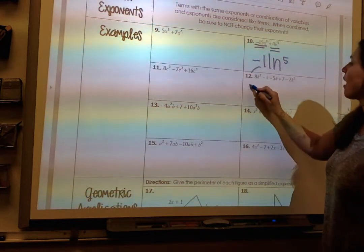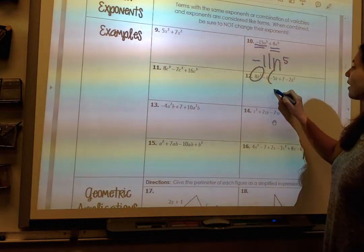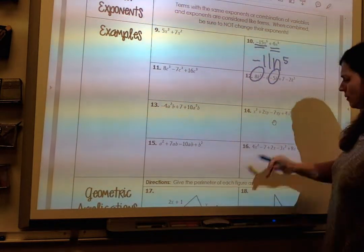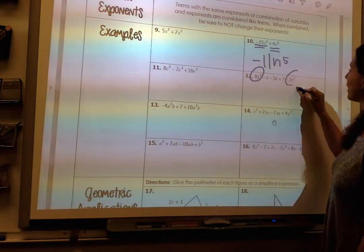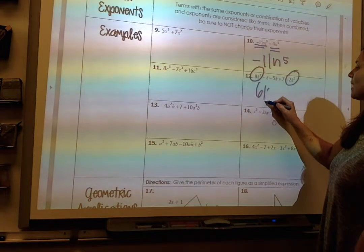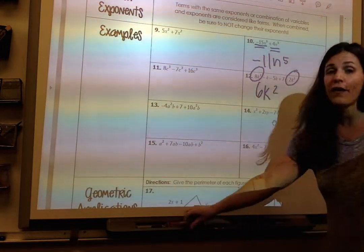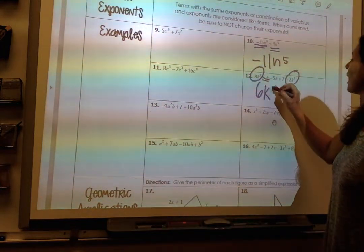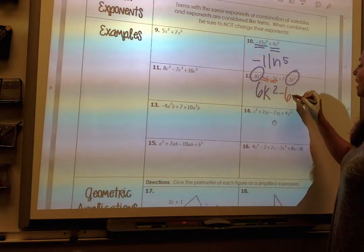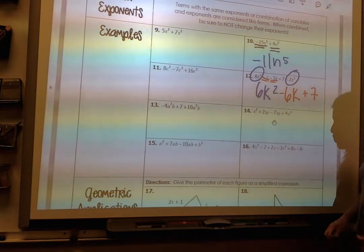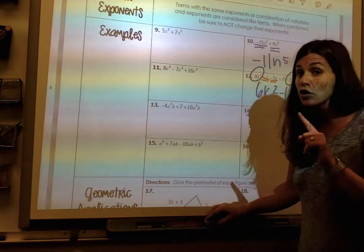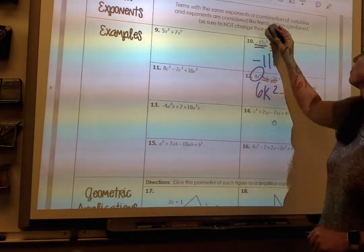So when I look down here, I have 8k squared, negative 5k, is that the negative 5k squared? Nope, 8k squared and a negative 2k squared, which gives me 6k squared. If I combine my k's, I have negative k and a negative 5k, making it a negative 6k, and my constant term is just positive 7. So that's what number 12 is going to look like. Exponents don't change when we combine terms.